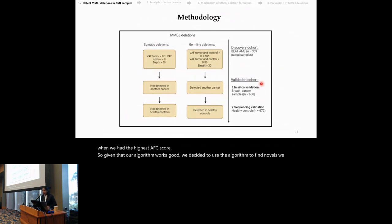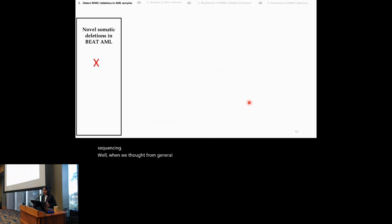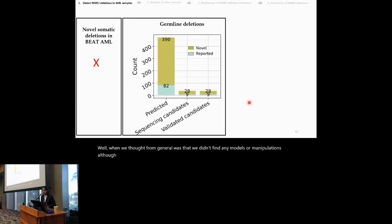We also wanted to do another set of validation in another cohort, which is the TCGA-BRCA. And then finally, we wanted to choose a few deletions to validate it by sequencing. What we found from Beta-ML was that we didn't find any novel somatic deletions. Although, we were able to find some novel germline deletions, after which we chose a few ones for sequencing and we were able to validate all of them via targeted sequencing.